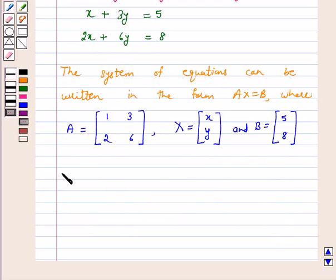Now, the determinant of A is equal to 6 minus 6, which is equal to 0.